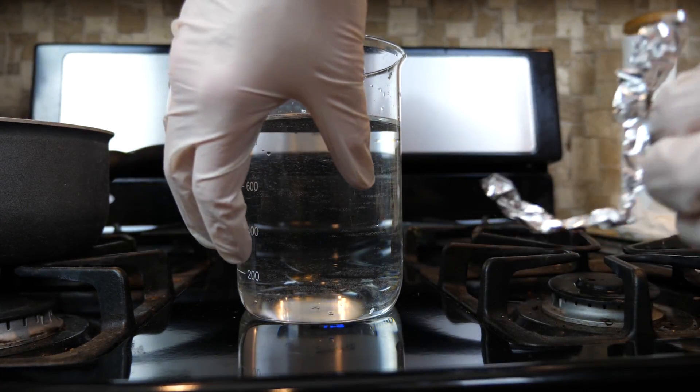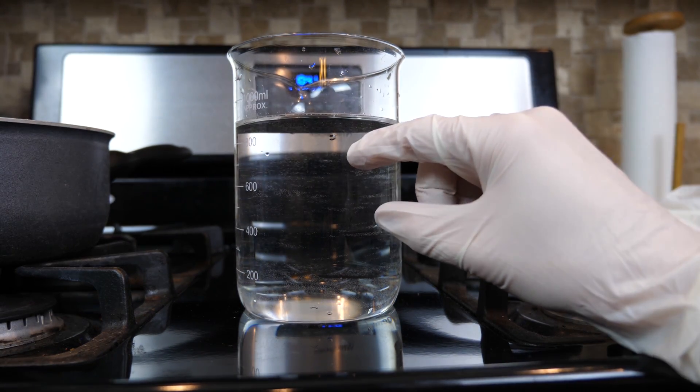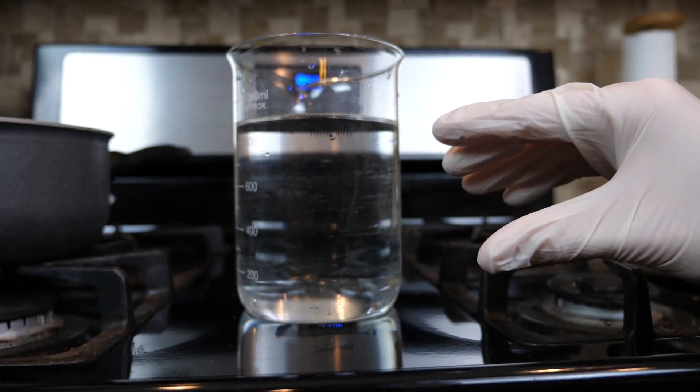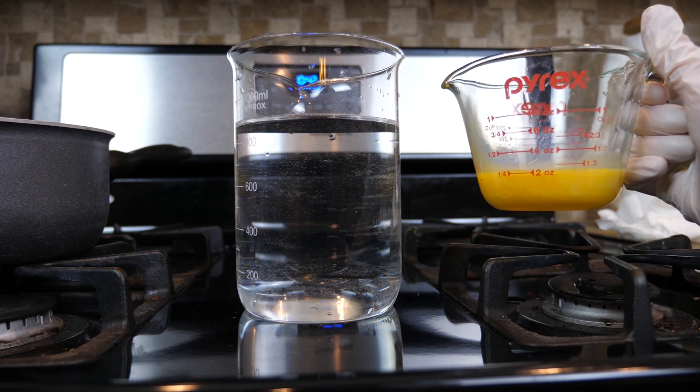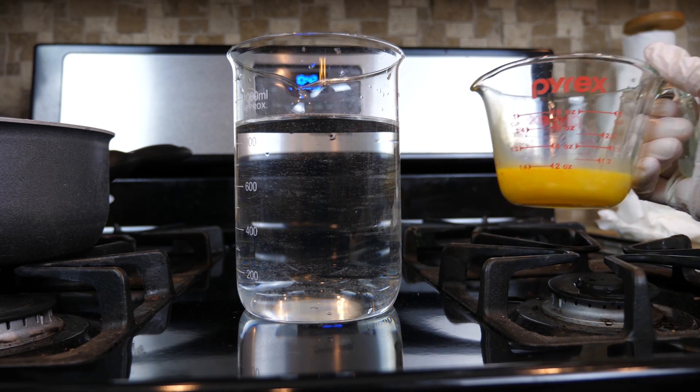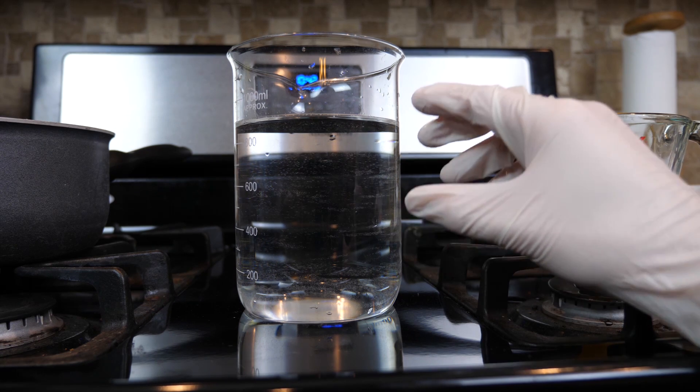And the basic solution just means that there's a lot of ions in the water that will help pull that protein apart and string it out and denature it. So I have here some egg yolks. Let me show you what happens when I pour it in the solution here. So this is just a concentrated solution of potassium hydroxide.